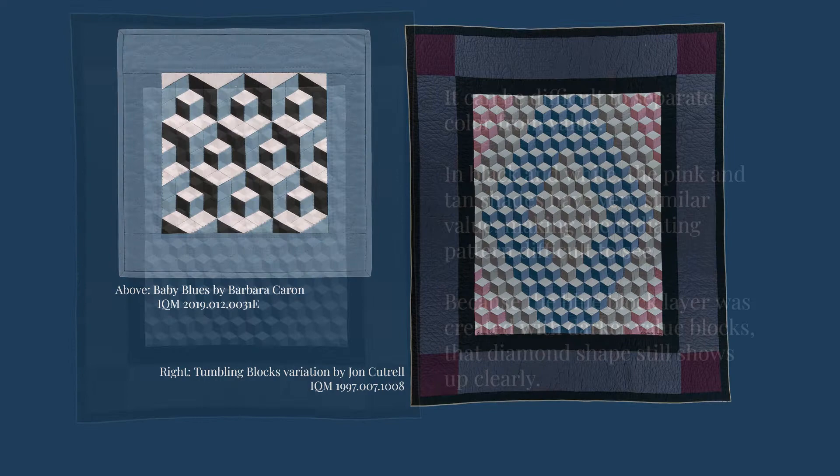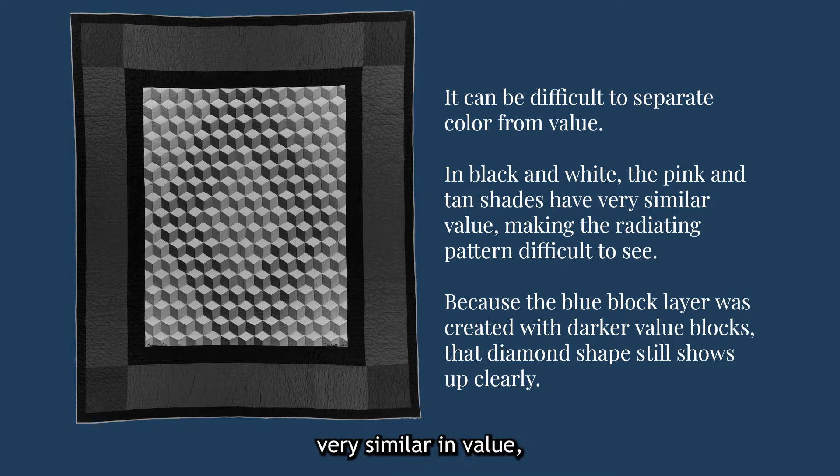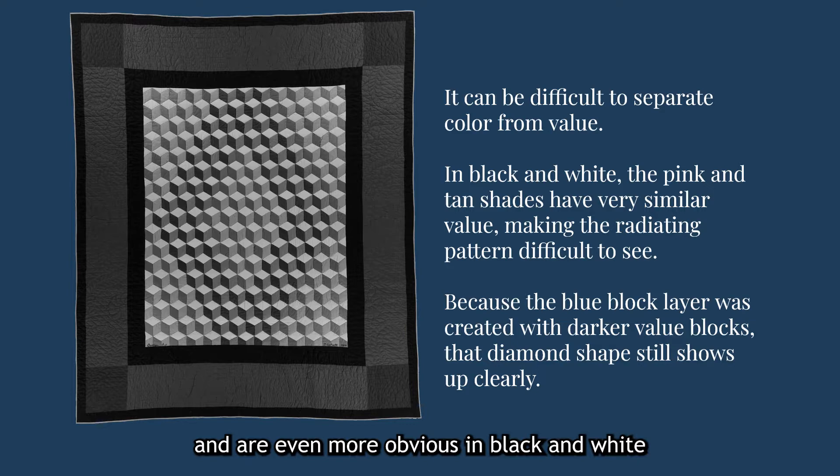If we look at this quilt in grayscale, we can see that the tan and pink blocks are composed with fabrics very similar in value, meaning that the pink diamond is very difficult to see. The blue blocks, however, were created with a darker value and are even more obvious in black and white than they were in color.